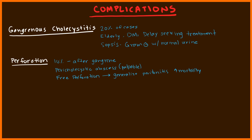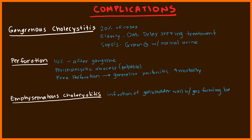Another complication is emphysematous cholecystitis, where the patient gets infection of the gallbladder wall with gas-forming bacteria, resulting in gas in the gallbladder wall — visible on ultrasound. Common causative organisms are E. coli, Staph, Strep, Pseudomonas, and Klebsiella. An interesting physical finding is abdominal crepitus — when you palpate the abdomen, it feels crinkly, like touching paper. If you notice this in a very sick patient, be alert.